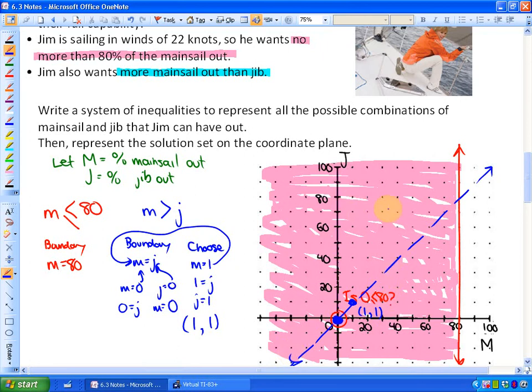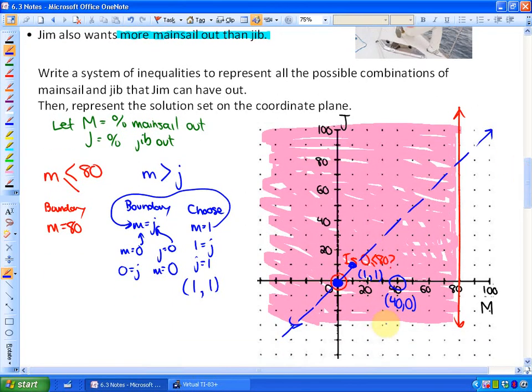To figure out which side of this line to shade, we could take a test point. But we can't take a test point that is on the boundary line. So we can't use the point (0,0) or (1,1) or (2,2) or (3,3) or (4,4). We have to use some other point. So I am going to use the point right here. This is the point (40,0). So I am going to ask myself, because 40 represents the m coordinate, is 40 greater than 0? And the answer to that question is absolutely yes. So I would shade that side of the blue boundary line.